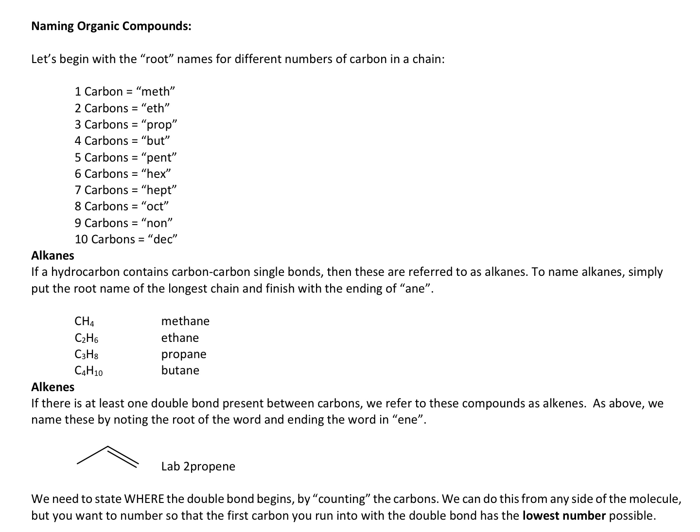When we deal with different lengths of carbons chained together, there's a general term for how many carbons we have linked. If we have one carbon, that's referred to as meth. Eth is 2, prop is 3, but is 4, pent is 5, hex is 6, hept is 7, oct is 8, non is 9, and dec is 10.